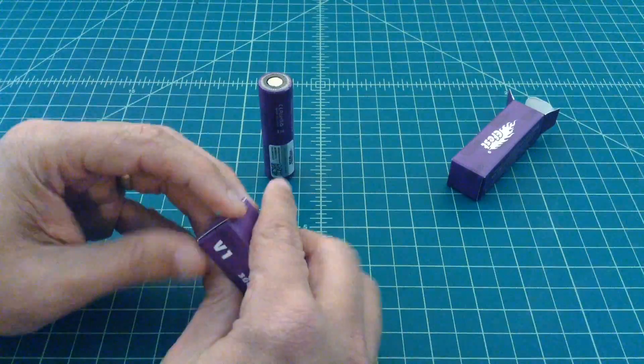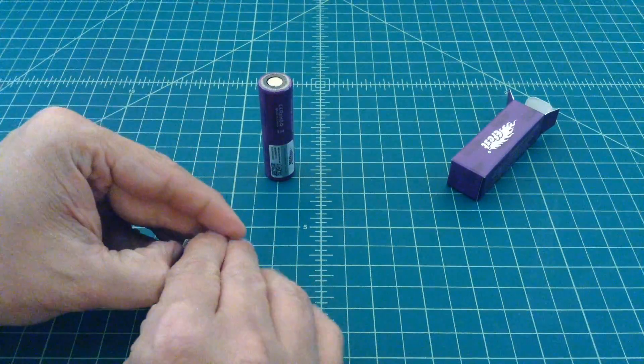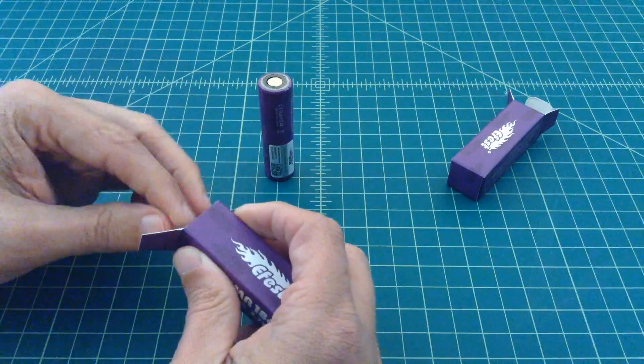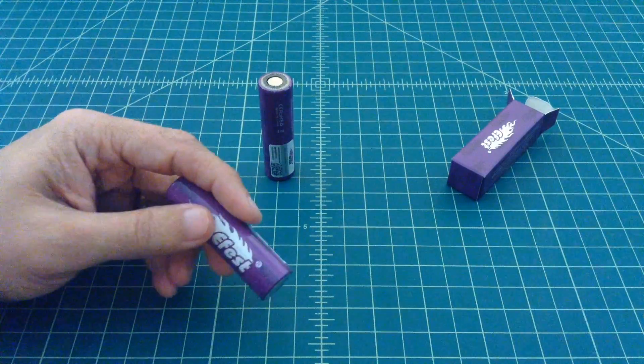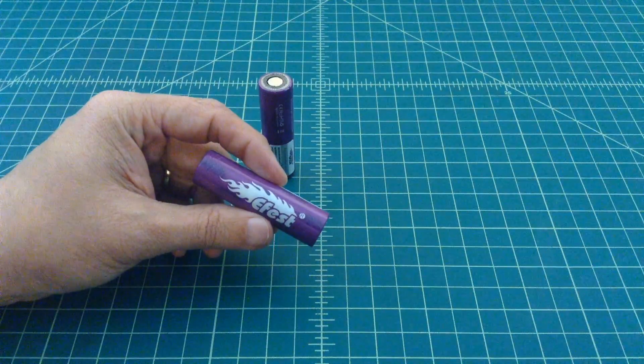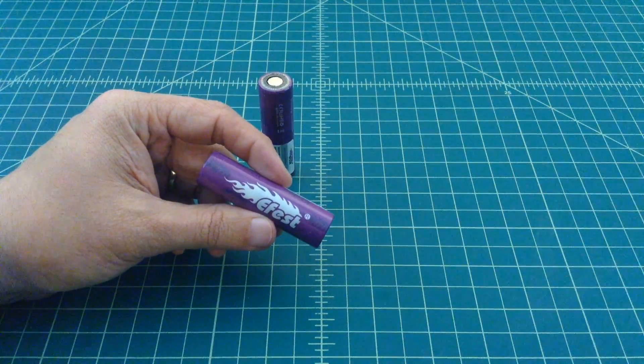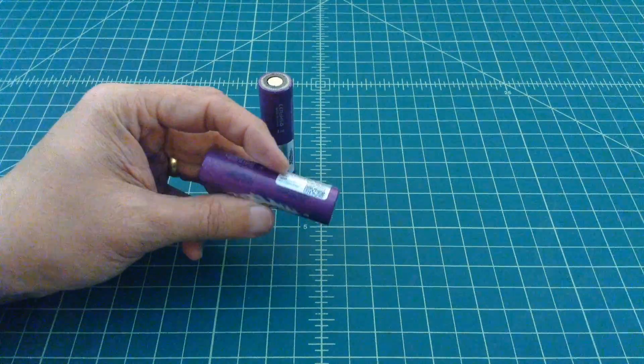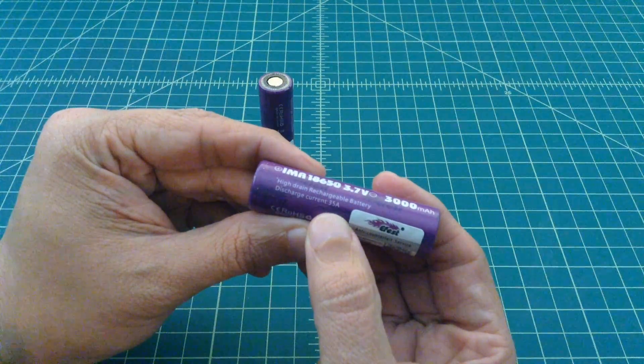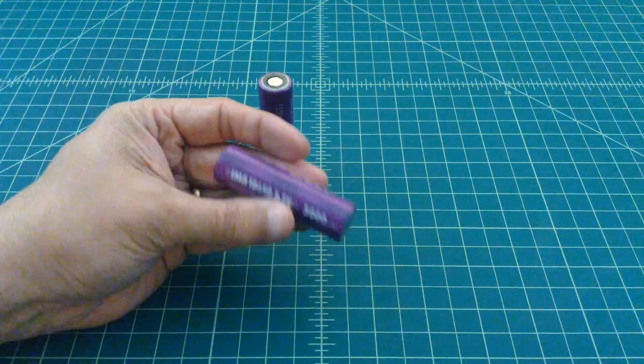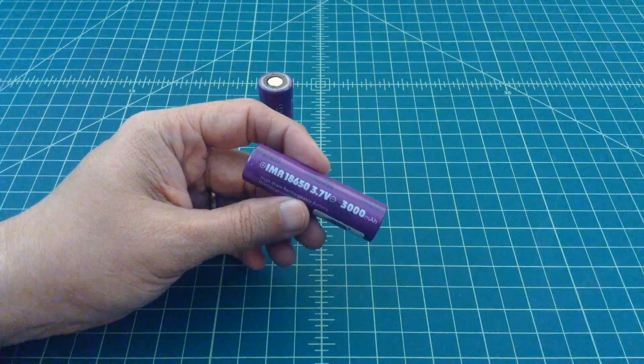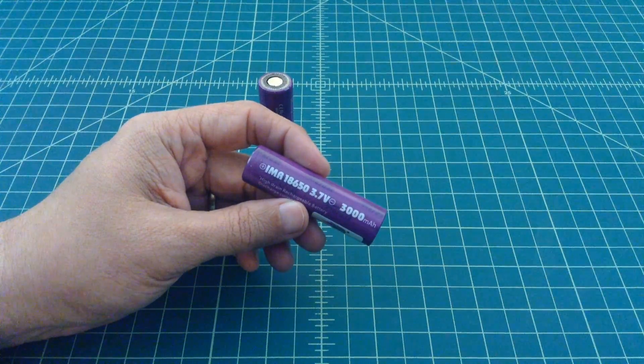These batteries do not have surge protection. You can see they say eFest along the top. You might ask, what's the difference between an IMR and an ICR battery? Well, the chemical compounds of lithium manganese versus lithium cobalt allow these batteries to discharge energy at a faster rate. So you can have two batteries, both of them being 3000 milliamp hours, which is the measure of capacity for a battery. One might be at 10 amps and one might be at 30 amps. These are actually rated at 35 amps. And what that means is that energy comes out of this battery faster than it would come out of a battery of a lower amperage.